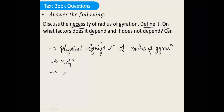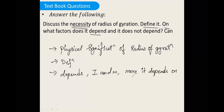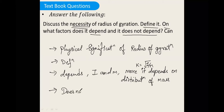On which factors does it depend? It depends on I (moment of inertia) and m (mass). More specifically, it depends on the distribution of mass. The value of k is equal to the square root of I divided by m. It does not depend on omega or alpha.